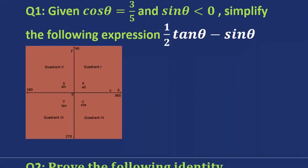We are given cosine theta, and we are told that this is equal to 3 over 5. Cosine is adjacent over the hypotenuse, so we've got our x value is 3 and the hypotenuse is 5. So we're missing the y side, or the opposite side. We know we can use Pythagoras to find the y side, assuming of course that the sides are in a right angle triangle.